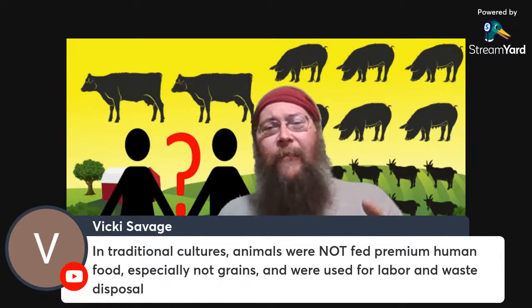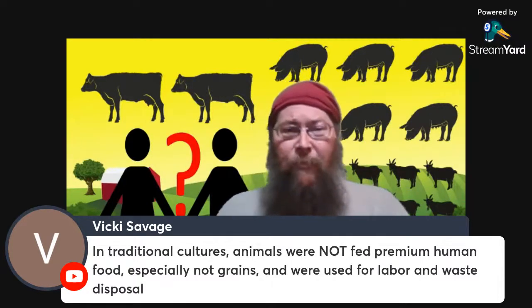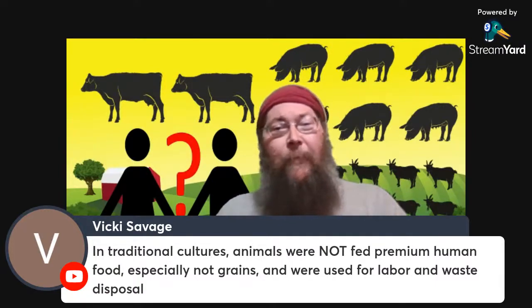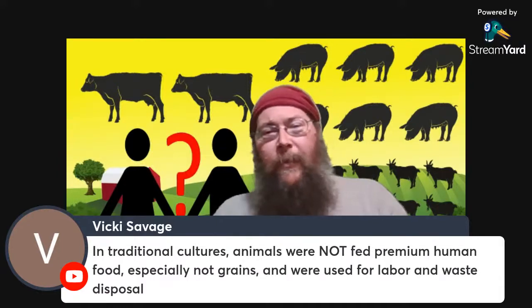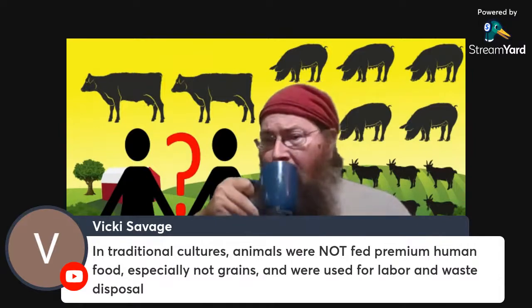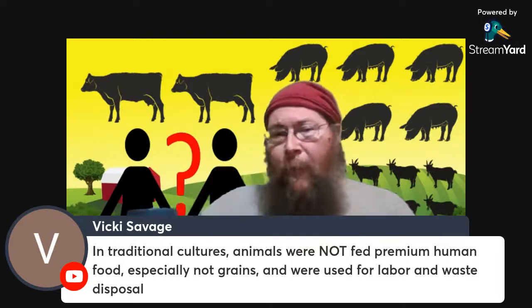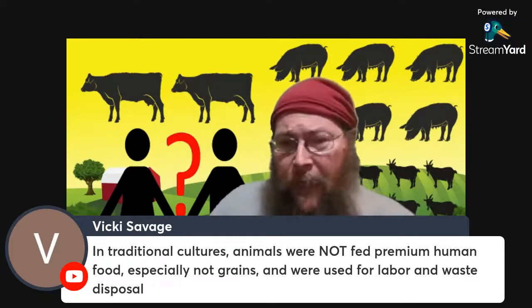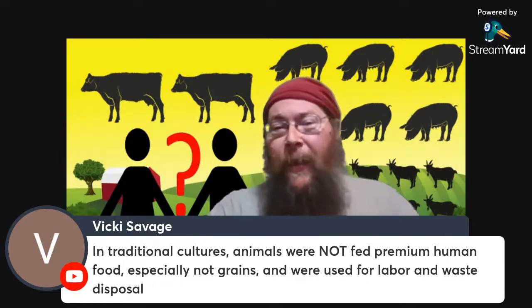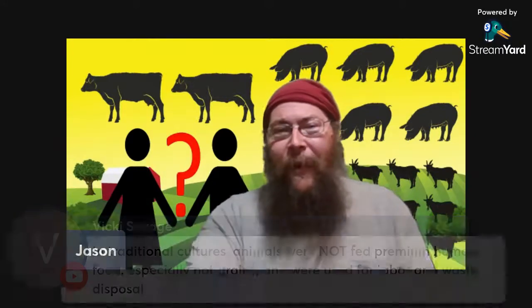Instead, think about what an animal is doing for you in the form of work and land management. Goats browse, sheep graze, and pigs root. Chickens come along and they pick up the bugs — they do pest control for you. Whenever you think of livestock on your farm or homestead as workers performing certain functions, the fact that they produce an edible byproduct of living on the farm is an extra bonus, not the end goal.